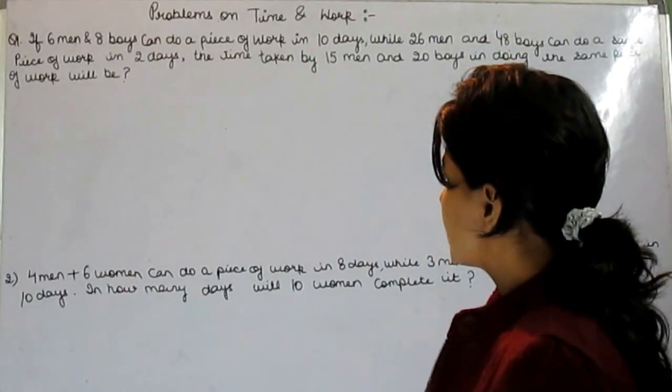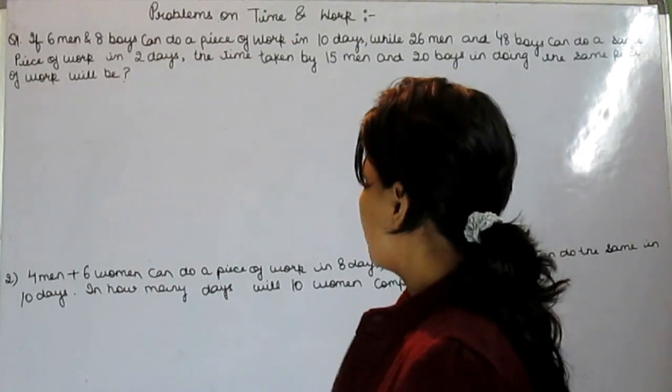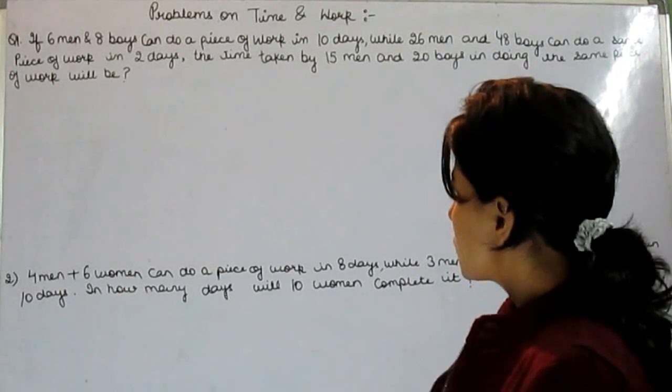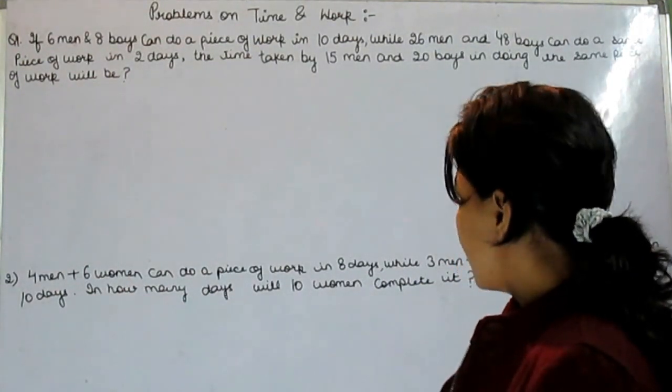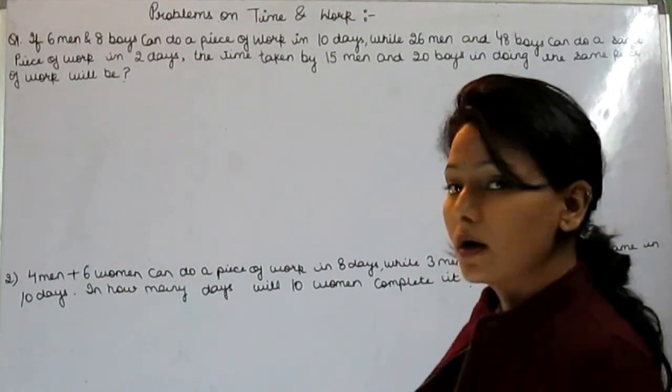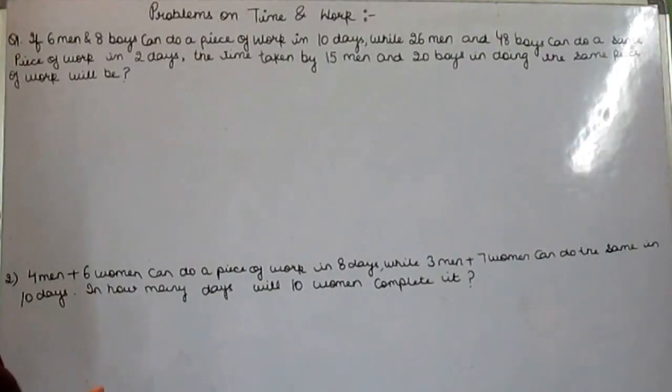First question is if 6 men and 8 boys can do a piece of work in 10 days, while 26 men and 48 boys can do the same piece of work in 2 days. To solve this question, we need to follow only 2 steps.